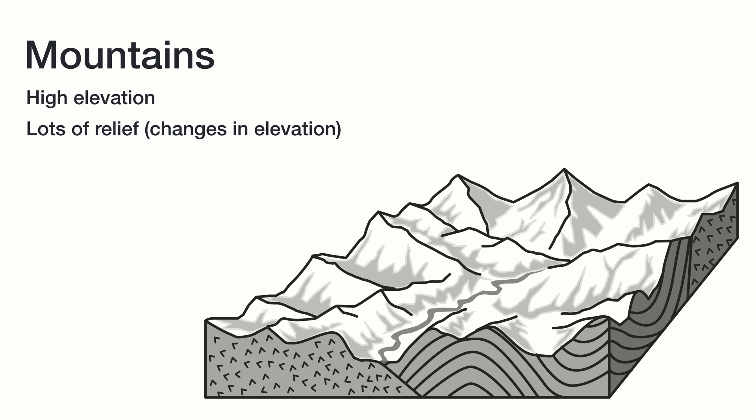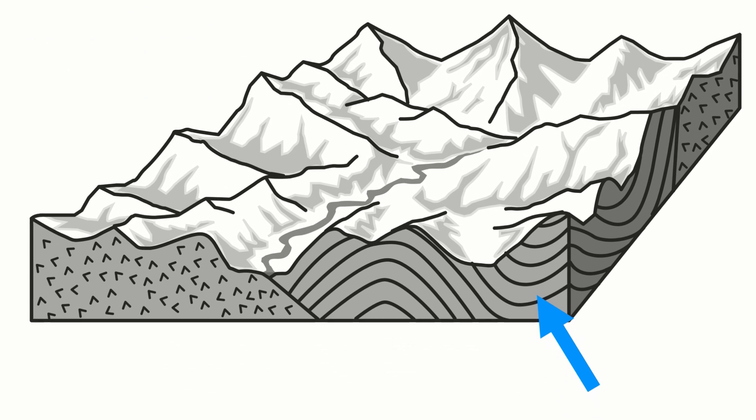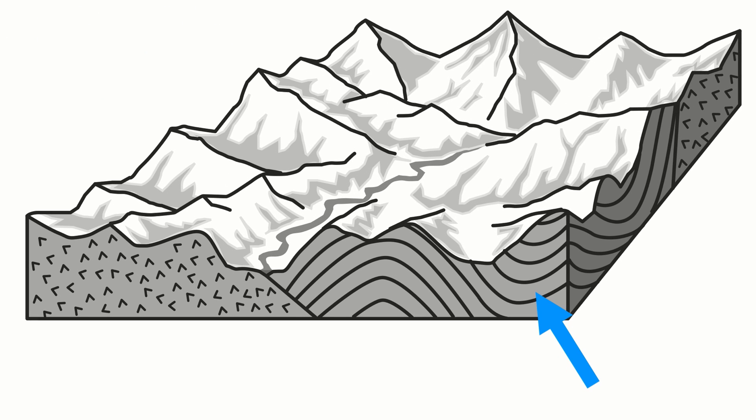Finally, and most importantly, mountains have deformed bedrock, meaning the layers of rock beneath the surface have been folded, faulted, or tilted by the movement of Earth's crust. This can be seen in this diagram as the layers of rock are no longer horizontal.